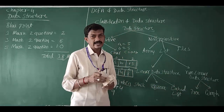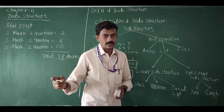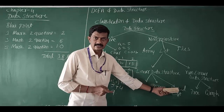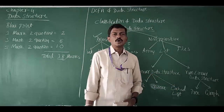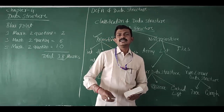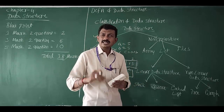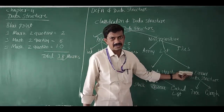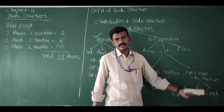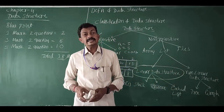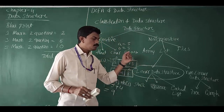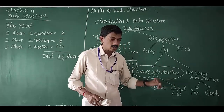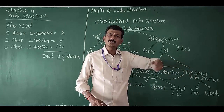In a linear data structure, data items are stored one after the other — for example, stack, queue, and linked list. In a non-linear data structure, one data item is connected to multiple other data items — for example, tree and graph. We will discuss these in detail in upcoming classes, covering stack and its subtopics, queue and its subtopics, linked list and its subtopics, and non-linear data structures such as tree and graph.